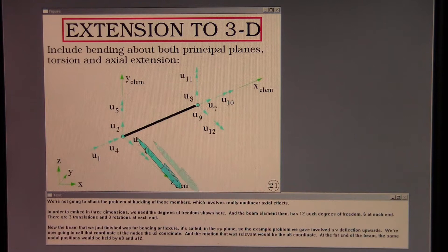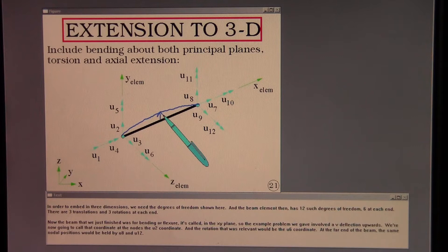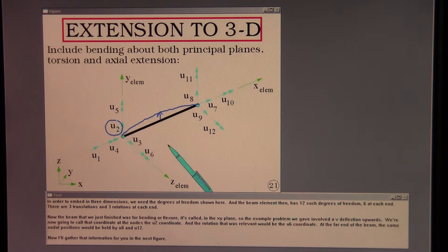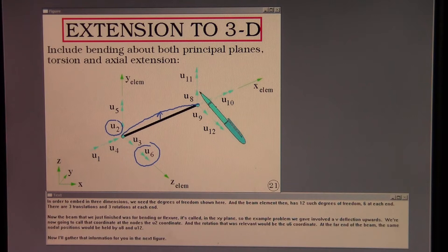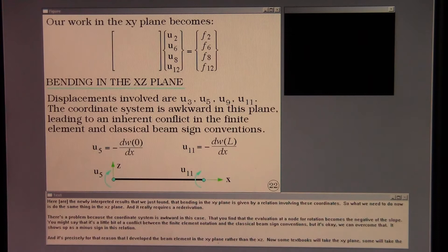There are three translations and three rotations at each end. Now the beam that we just finished was for bending or flexure in the XY plane. So the example problem we gave involved a V deflection upwards. We're now going to call that coordinate at the nodes the U2 coordinate. And the rotation that was relevant would be the U6 coordinate. At the far end of the beam, the same nodal positions would be held by U8 and U12. Now I'll gather that information for you in the next figure.